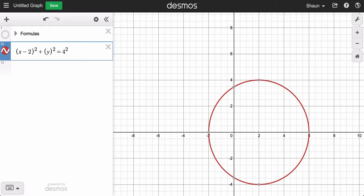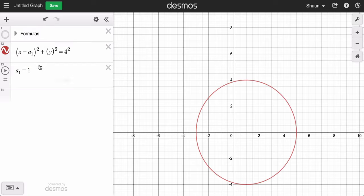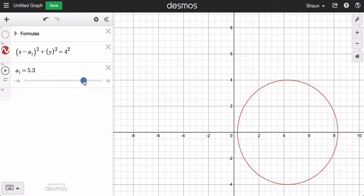And if I subtract 2, it goes to the right by 2. Let's put a slider in there for fun. Let's call it a sub 1. So the more I subtract, the more it moves to the right.